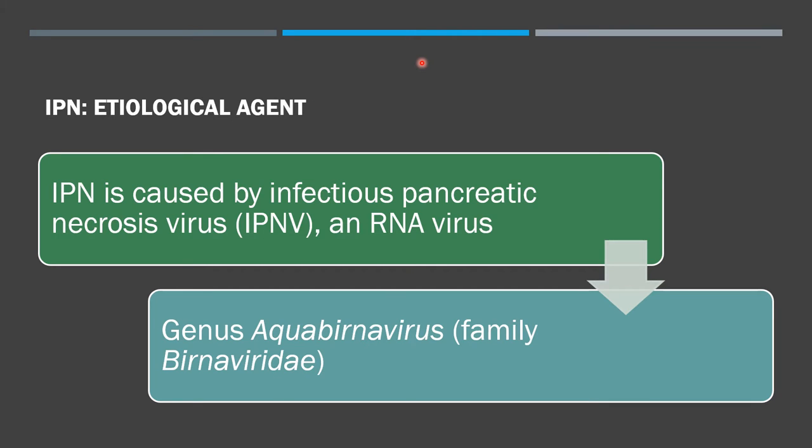The most frequently found and highly virulent strain of IPNV is the SP serotype in genogroup number 5.